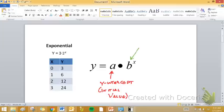And then this b value is the growth rate. That's the factor that you're multiplying by every time.